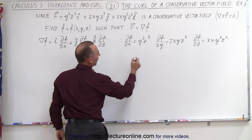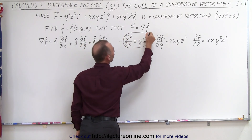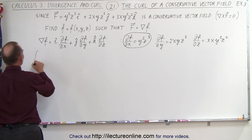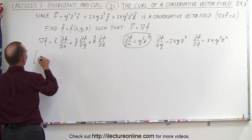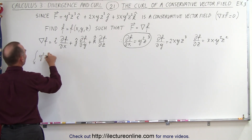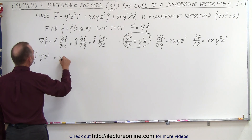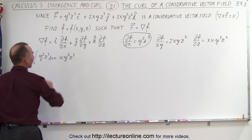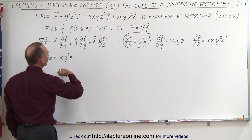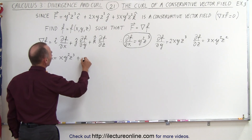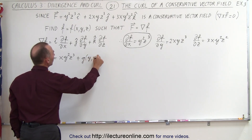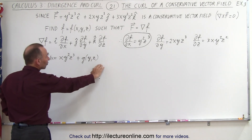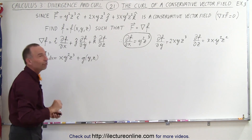What we're going to do now is integrate the first equation with respect to x only. Integrating y²z³ with respect to x gives us xy²z³. Of course we could still have a function — let's call it g — of the variables y and z, because that can appear when we take the derivative with respect to x and it disappears, so we should account for the possibility of it existing.